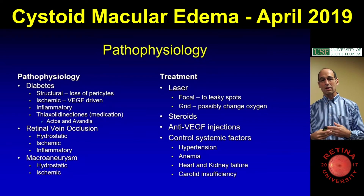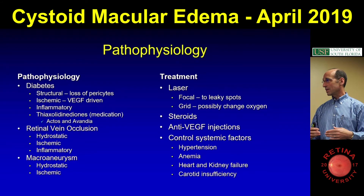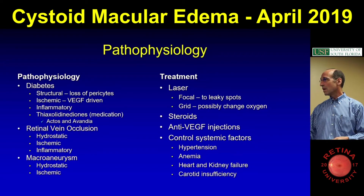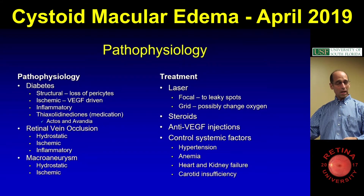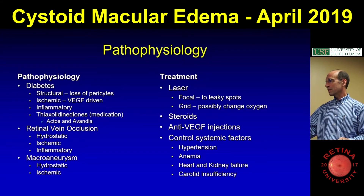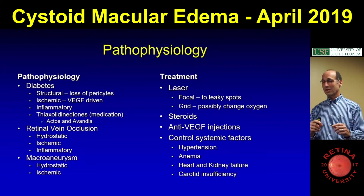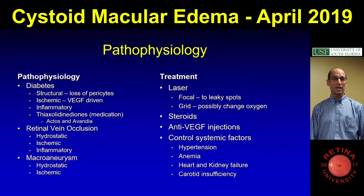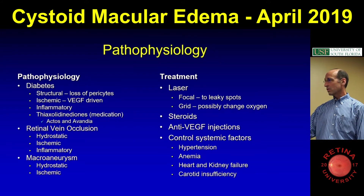For the pathophysiology of macular edema in structural ones, like I said, it's more complicated. For diabetes, it's structural because you see loss of pericytes — everyone's going to ask you that. But also anti-VEGFs work, anti-inflammatories work. There's Ozurdex and Iluvien. And also you have to ask if any of your diabetics are on Actos or Avandia, as those can cause retinal swelling. Retinal vein occlusions also respond to anti-VEGFs, and so do macular aneurysms.